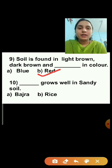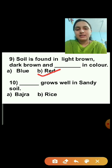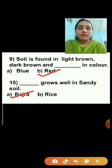Question number ten: Dash grows well in sandy soil. Option A is bajra, option B is rice. Bajra grows well in sandy soil — bajra is the right answer. Whereas rice grows well in clay soil.